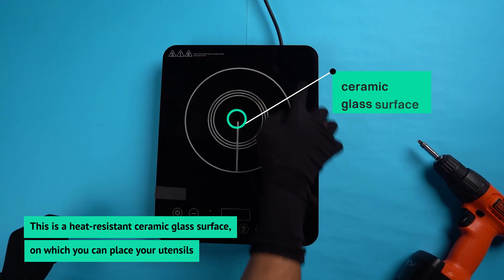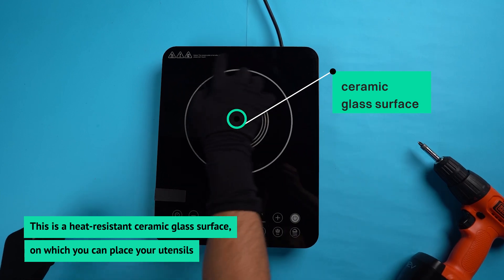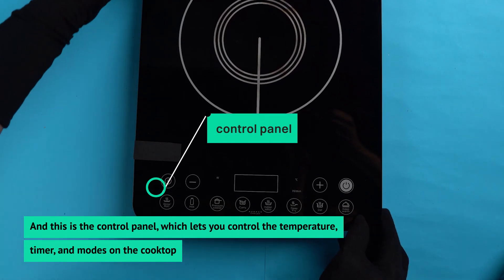This is a heat-resistant ceramic glass surface on which you can place your utensils. And this is the control panel, which lets you control the temperature, timer and modes on the cooktop.